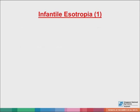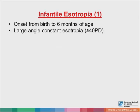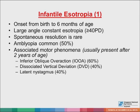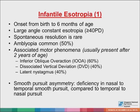Infantile esotropia is a condition you need to be familiar with. The onset is usually from birth to about six months of age, characterized by large angle constant esotropia of more than 40 prism diopters. Spontaneous resolution is rare and amblyopia is common. Associated features include inferior oblique overreaction, dissociated vertical deviation, and later nystagmus. They have a smooth pursuit asymmetry demonstrable on the optokinetic drum, where there's a deficiency in nasal-to-temporal pursuit compared to temporal-to-nasal pursuit — a manifestation of visual motor immaturity. When seen in older children and adults with esotropia, this is a sign of neonatal onset.